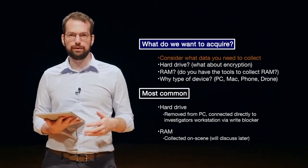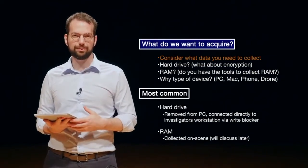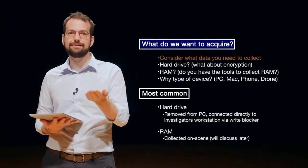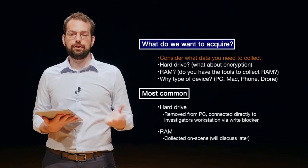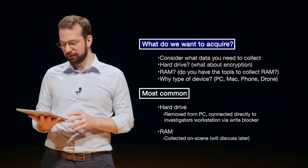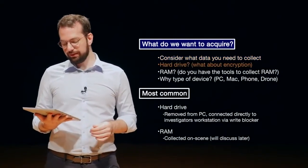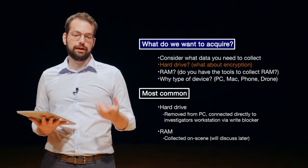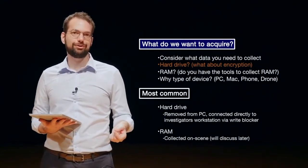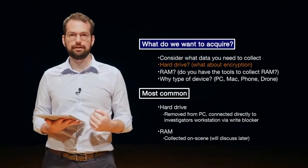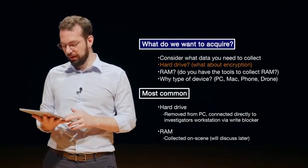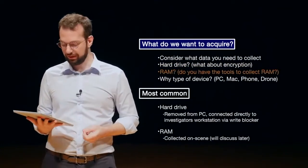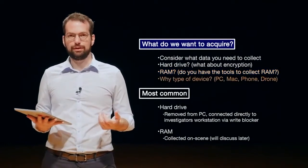What we will cover this week is post-mortem digital forensic acquisition, which is essentially when the suspect's computer is off, the hard drive has been taken out, and we are accessing the hard drive directly. There are other ways to collect data which we'll talk about in later lessons. Consider what data you need for the investigation — is it a hard drive, and is there any encryption on that drive making it more difficult to access? Do you have the correct tools to acquire RAM on the device you're trying to investigate?